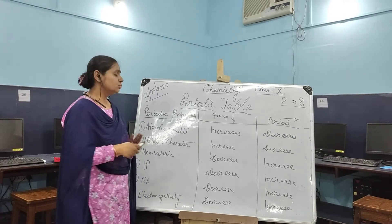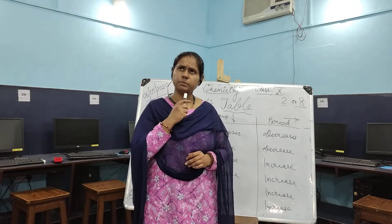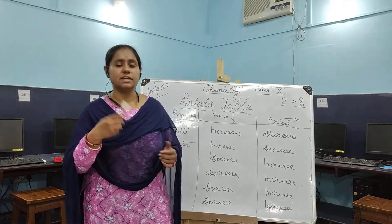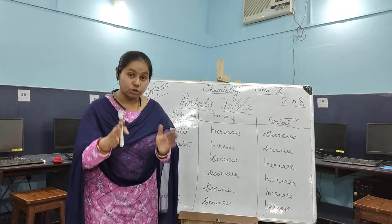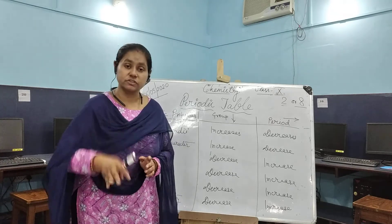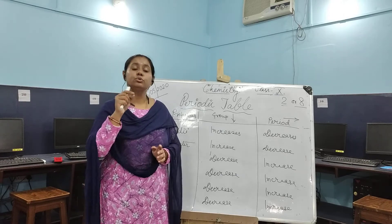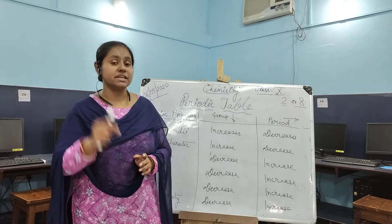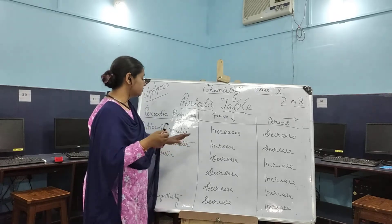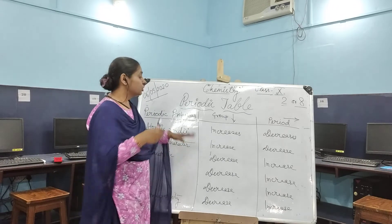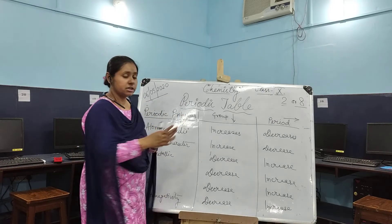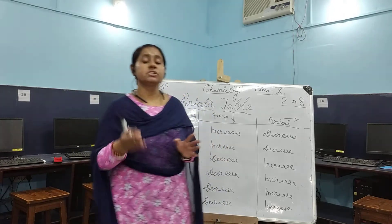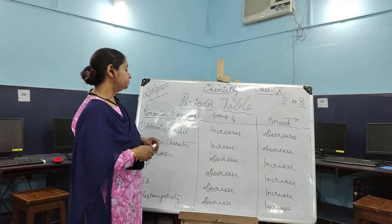Children often make mistakes — they get confused about this periodic property: in which direction will it increase or decrease? In order to remove this confusion and to make yourself clear about the topic, you have to write down the exact reason. Once the exact reason is written down, it will be clear in which direction the periodic property is increasing or decreasing.